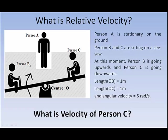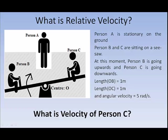In this example, there are three people again. Person A is standing on the ground. Person B and person C are sitting on a seesaw. At this position, the seesaw is rotating in a clockwise direction, so person B is going upwards and person C is going downwards. The length from the center O to person B is 1 meter, and the length from the center to person C is also 1 meter. The angular velocity of the seesaw is 5 radians per second.